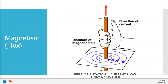Using the right-hand rule — thumb pointed towards negative, current direction — the magnetic field is going to wrap around in the direction of the fingers. For us, it doesn't matter which way the field is pointed or which way the flux is rotating around the part. We're just going to make sure there's a field. We're going to use AC — alternating current — and it's going to flop back and forth while we're magnetizing.